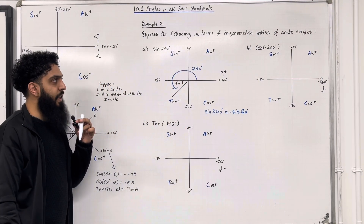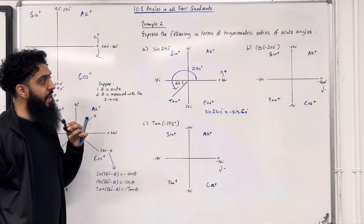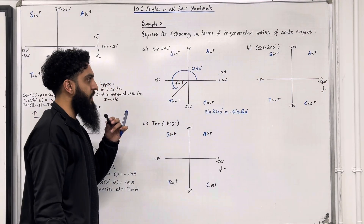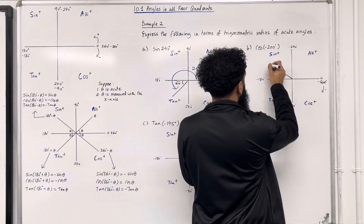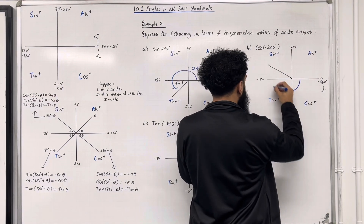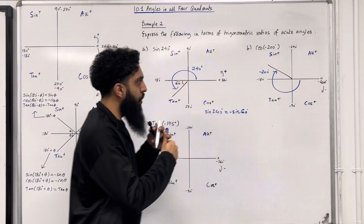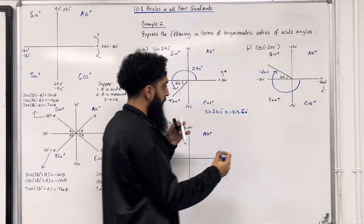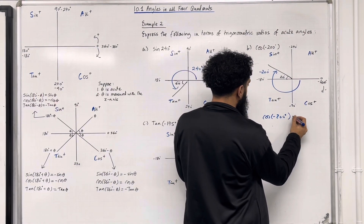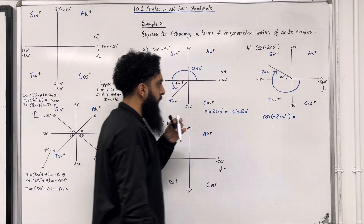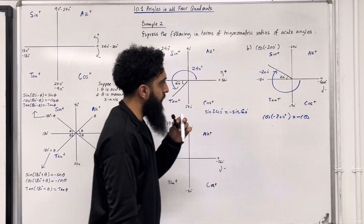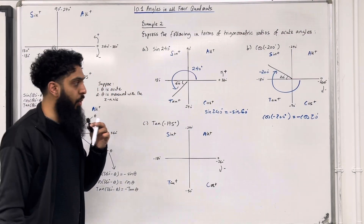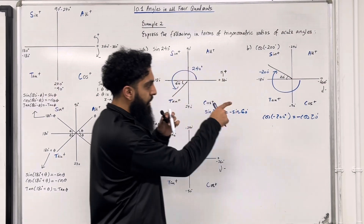Part B: cosine of minus 200 degrees. A negative angle, so starting from the positive x-axis at 0 degrees, we go clockwise to give minus 200 degrees. The angle lands somewhere over here. The acute angle created with the x-axis is 20 degrees. In this quadrant cosine is negative, so cosine of minus 200 degrees equals minus cos of 20 degrees.